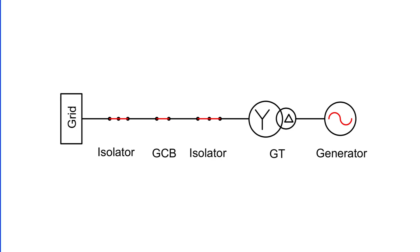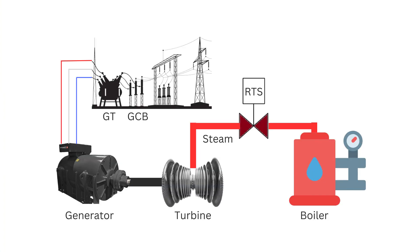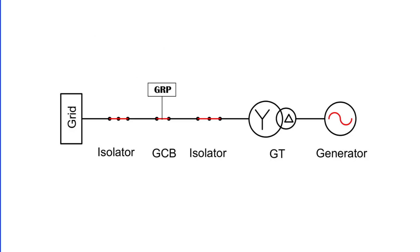A synchronous generator is designed to supply active power to the grid under normal conditions. However, if the prime mover, such as the turbine, fails, the generator remains connected to the grid and starts operating as a synchronous motor. In this mode, it draws active power from the grid, and this reversal of power flow is detected by the reverse power relay.